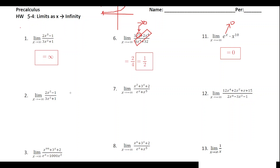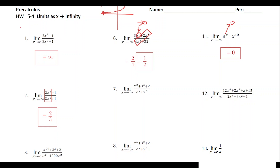For number two, we've got a polynomial in the numerator and denominator both with the same degree, so the horizontal asymptote will equal the ratio of the leading coefficients. Whether x is approaching positive infinity or negative infinity, the value of the function approaches that same number — the horizontal asymptote. In this case it'd be two over three.